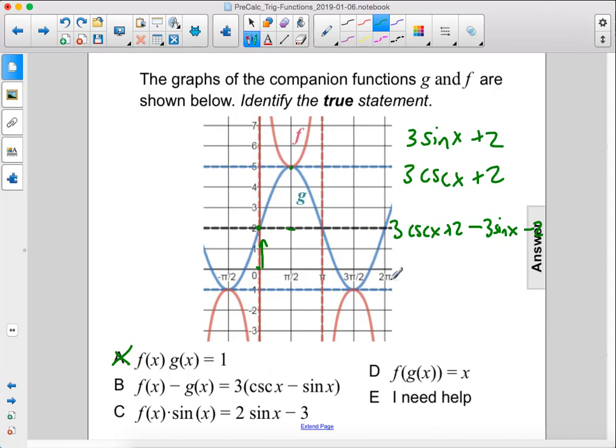That would be 3 cosecant x. We have plus 2 and minus 2, so those cancel. So then minus 3 sine x.